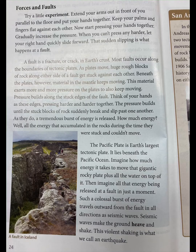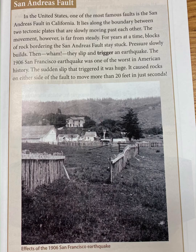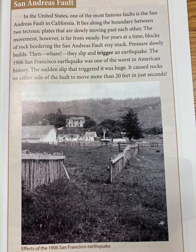Seismic waves make the ground heave and shake. This violent shaking is what we call an earthquake. One of the most famous faults is the San Andreas Fault in California. It lies along the boundary between two tectonic plates that are slowly moving past each other. However, the movement is far from steady. For years at a time, blocks of rock bordering the San Andreas Fault stay stuck as pressure slowly builds. Then — wham — they slip and trigger an earthquake.